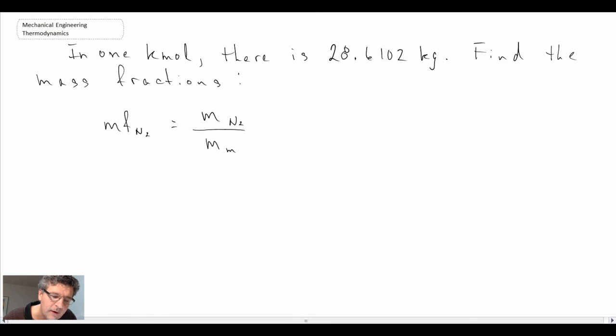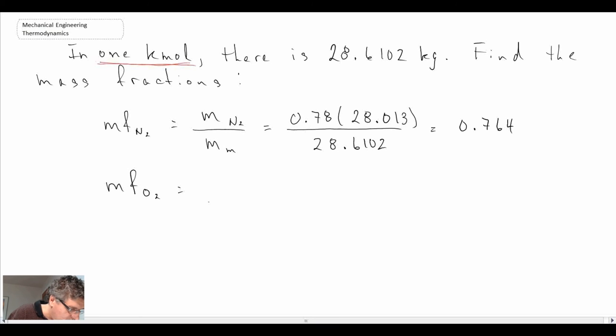what we're going to consider here is we're going to consider looking at only one kilomole. So, in one kilomole, we can write out how many kilograms there are of nitrogen. And then that's divided by the mass of the mixture itself.